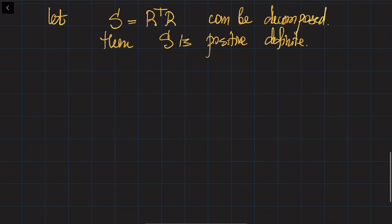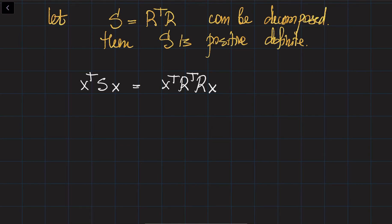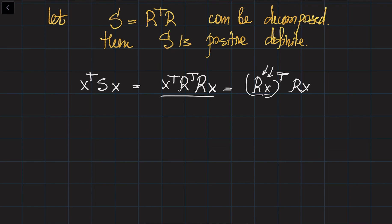To show this, note that S being positive-definite means X-transpose S X is positive. Substituting S with R-transpose R, we get X-transpose times R-transpose times R X. Note that this is nothing other than (RX)-transpose times (RX), because transposition is applied to both matrices in reverse order. This is simply the norm of the vector RX squared, which is obviously positive — or at least greater than or equal to zero — so X-transpose S X is positive as well.